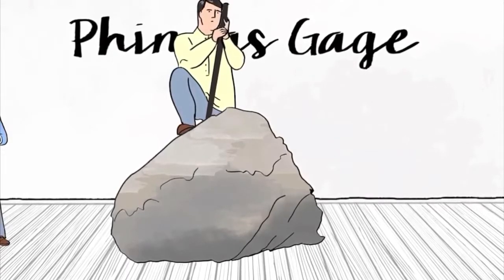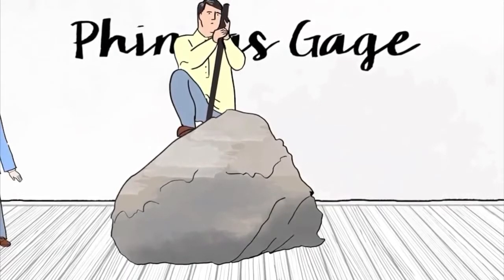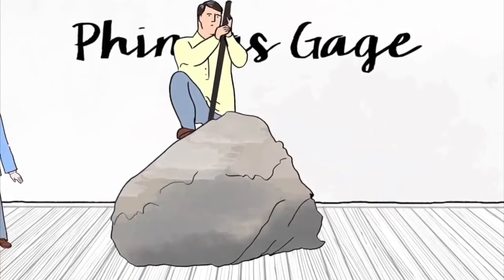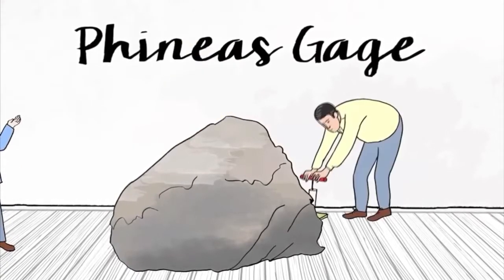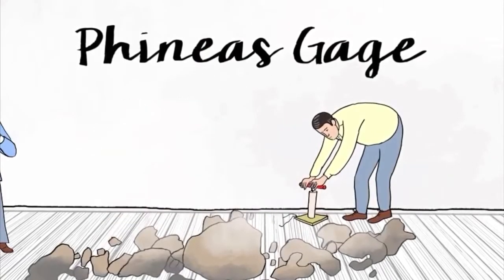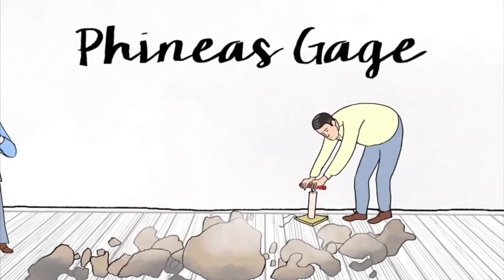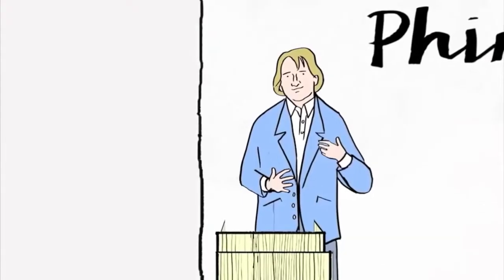Then he would cover the top with dirt and sand and take a tamping iron, which he carried with him, a big piece of steel that looked like a javelin, and used it to tamp down the sand and dirt so that later they could set the fuse and cause the explosions.